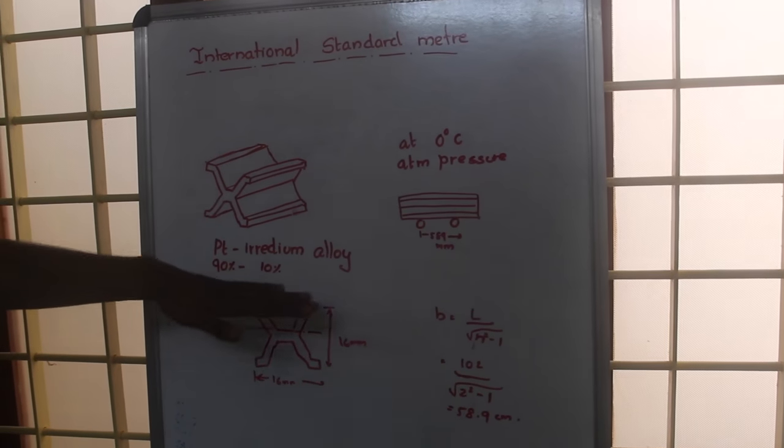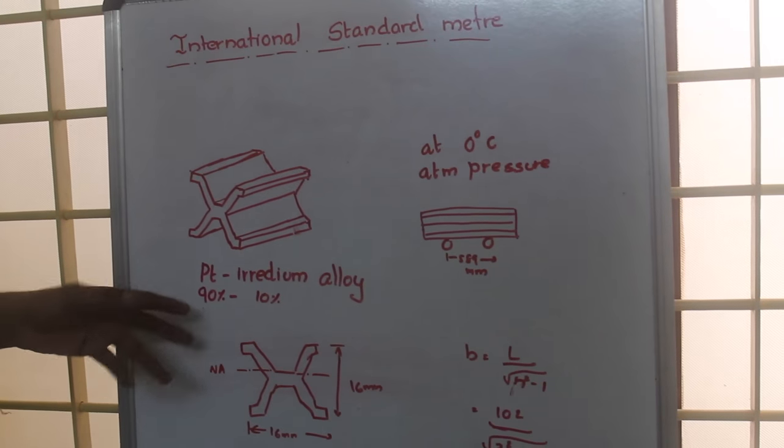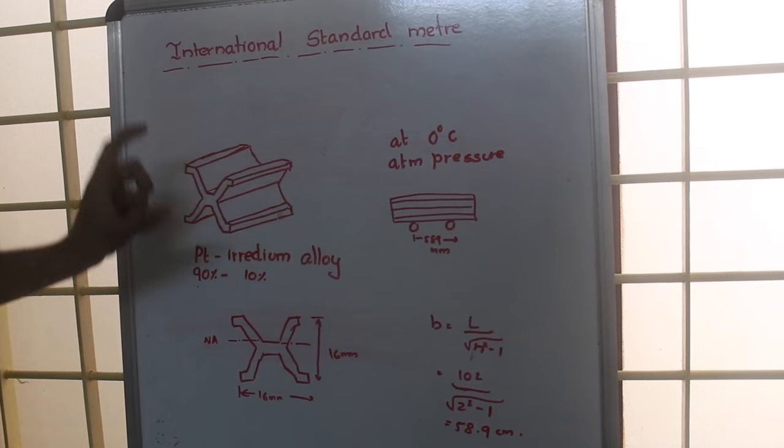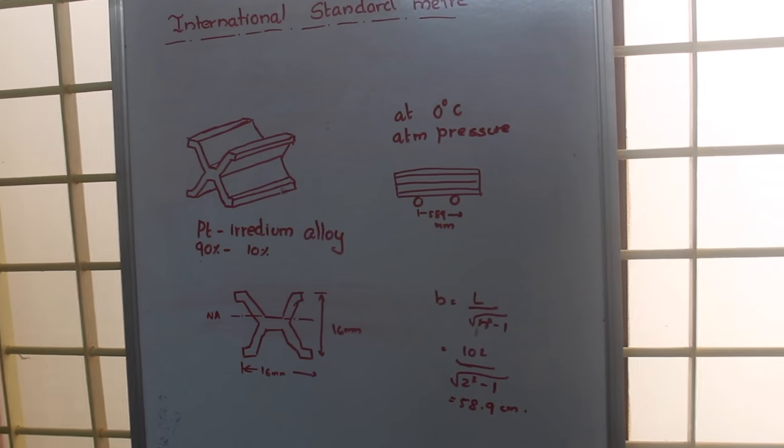Here we have a platinum-iridium alloy of 90 percentage and 10 percentage which is kept at 0 degrees Celsius and it will be kept at 1 atmospheric pressure.